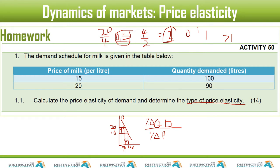To calculate the percentage change in quantity demanded: quantity changed from 100 to 90, so it changed by negative 10. We do 10 divided by 100 (the initial value) times 100, which gives us a percentage change of 10%. The negative sign can be ignored — I'll explain why later.